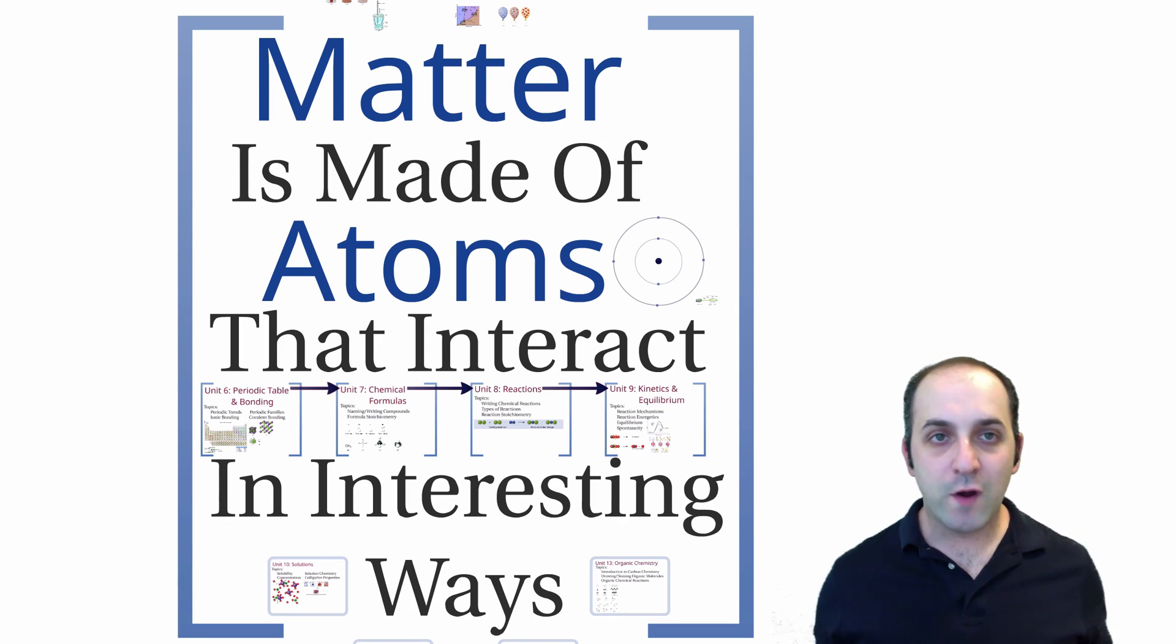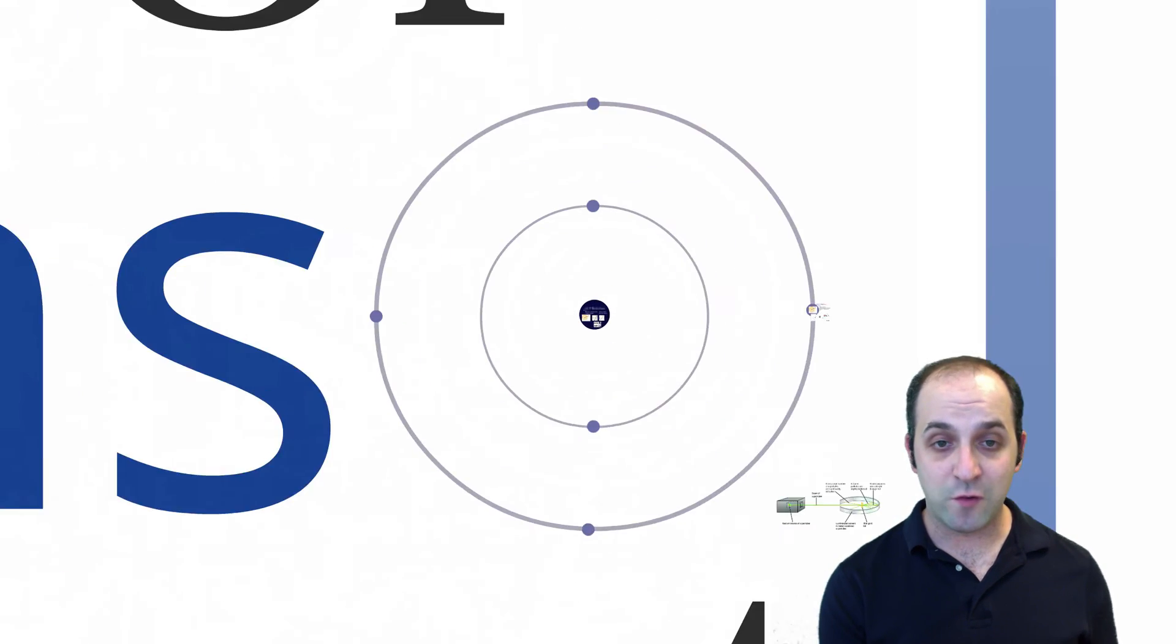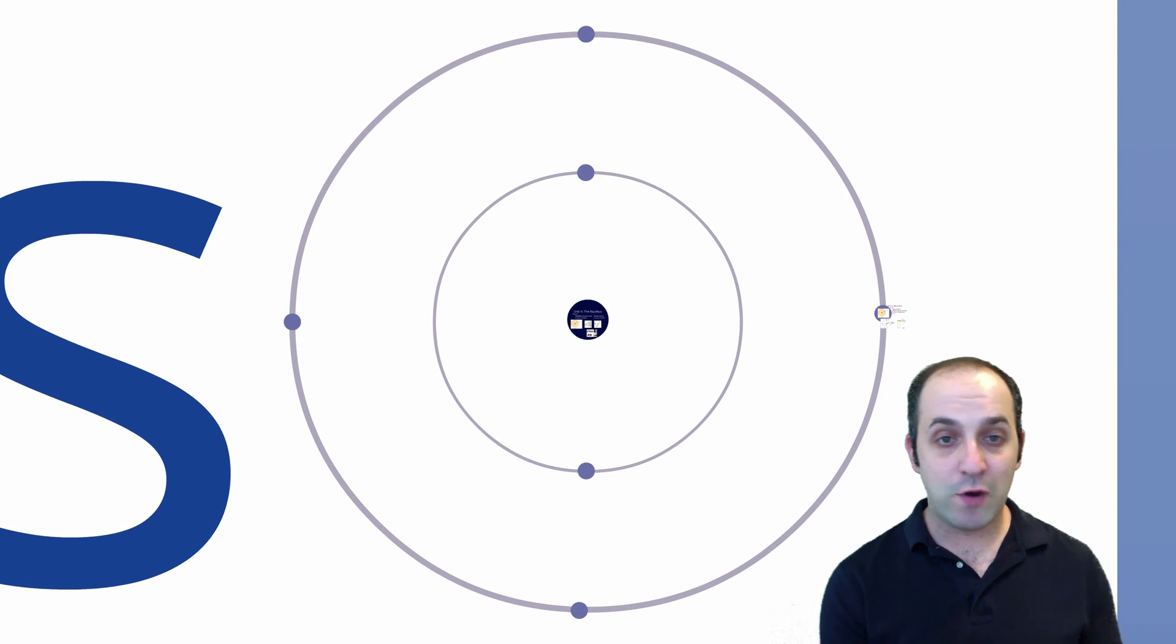Remember you can always play around with this prezi whenever you want, but remember that our overall theme for the year is that matter is made of atoms that interact in interesting ways. In units 2 and 3 we were dealing with large amounts of matter, looking at phases of matter, phase changes, and gas laws. Now we're actually going to look at individual units of matter, which of course are atoms. Unit 4 and unit 5 together are both going to deal with the atom.